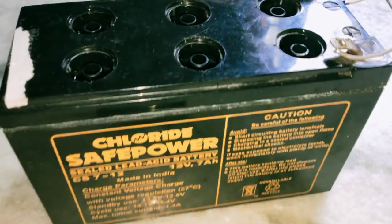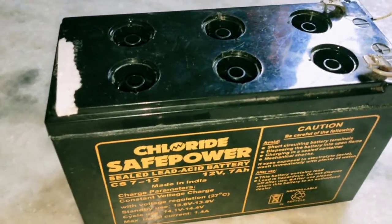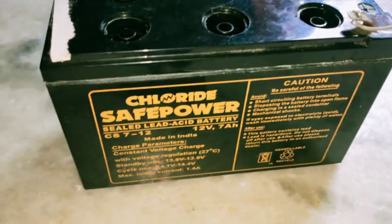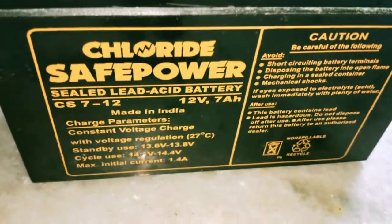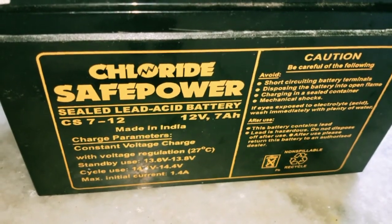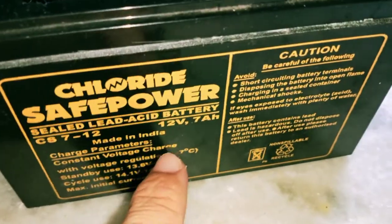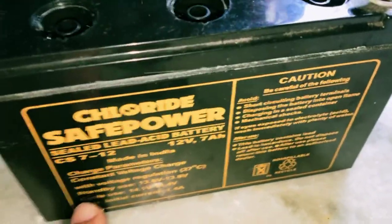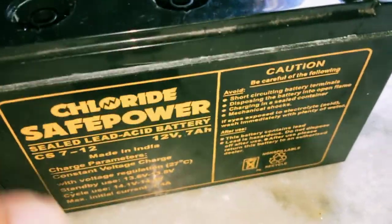Hello friends, today in this video I'm going to show you how to recover a dead sealed lead acid battery. This battery is from Excide company - it's a Chloride Safepower sealed lead acid battery. Here you can see it's 12 volt, 7 ampere-hour, made in India.